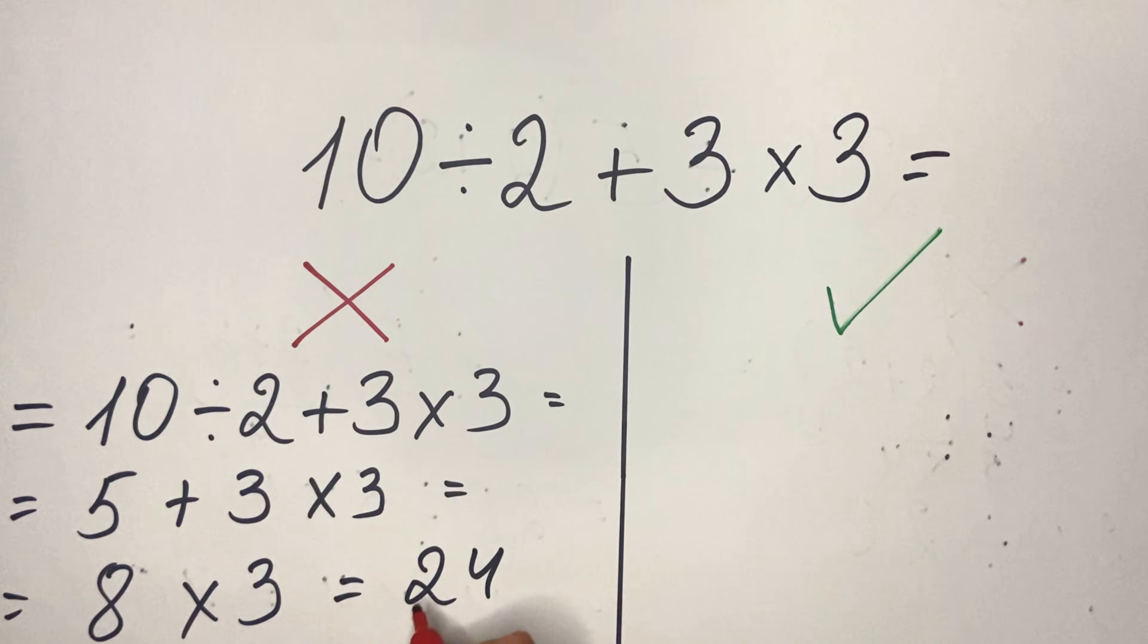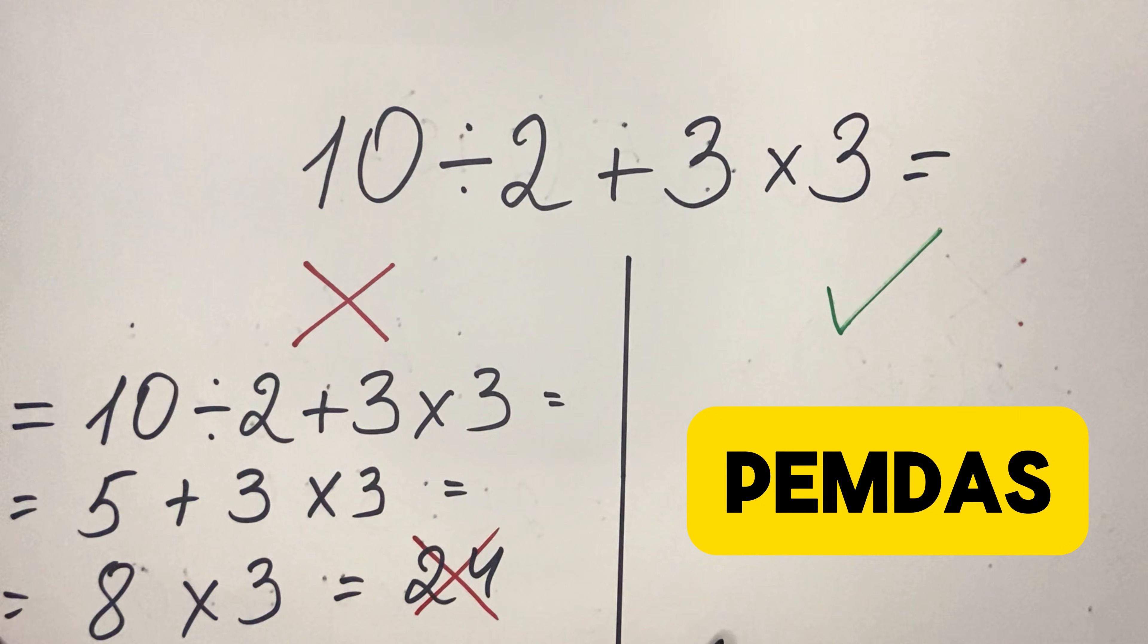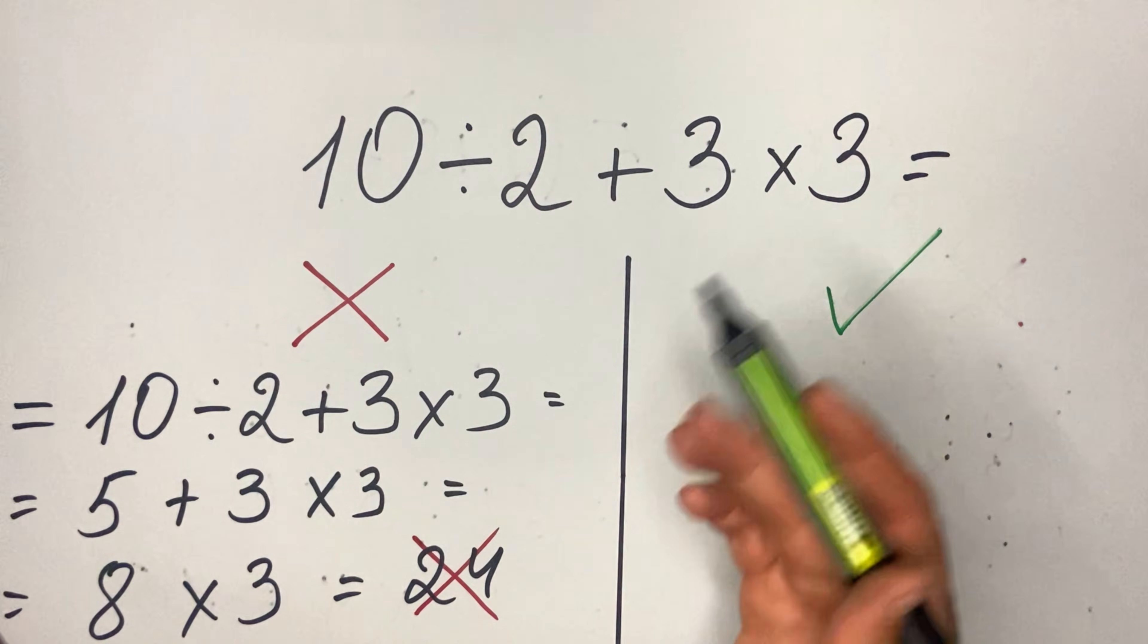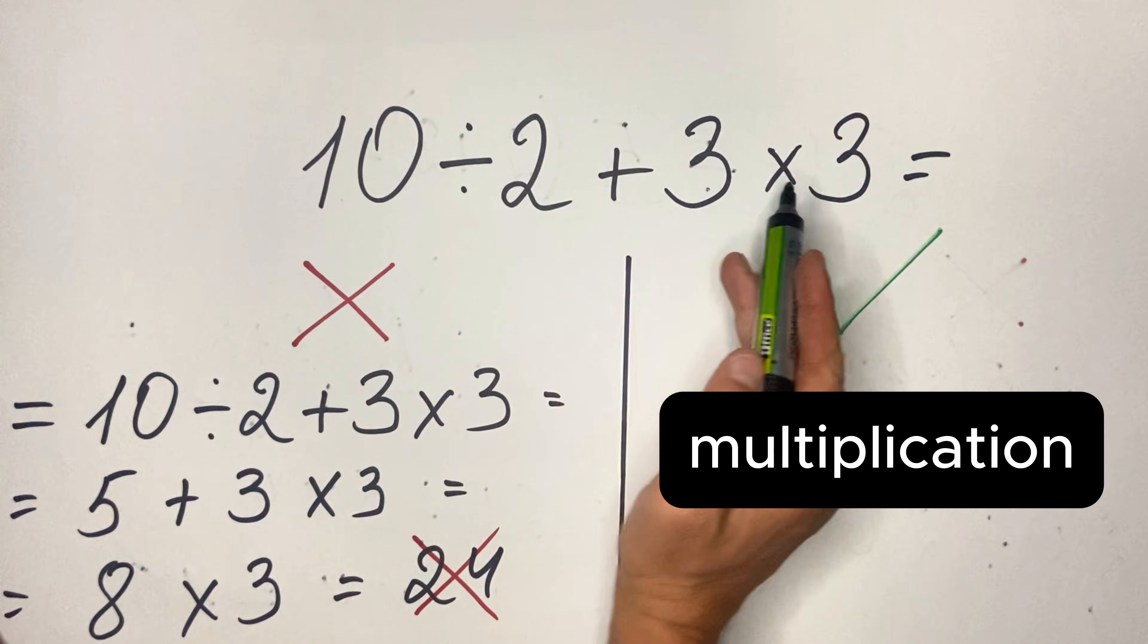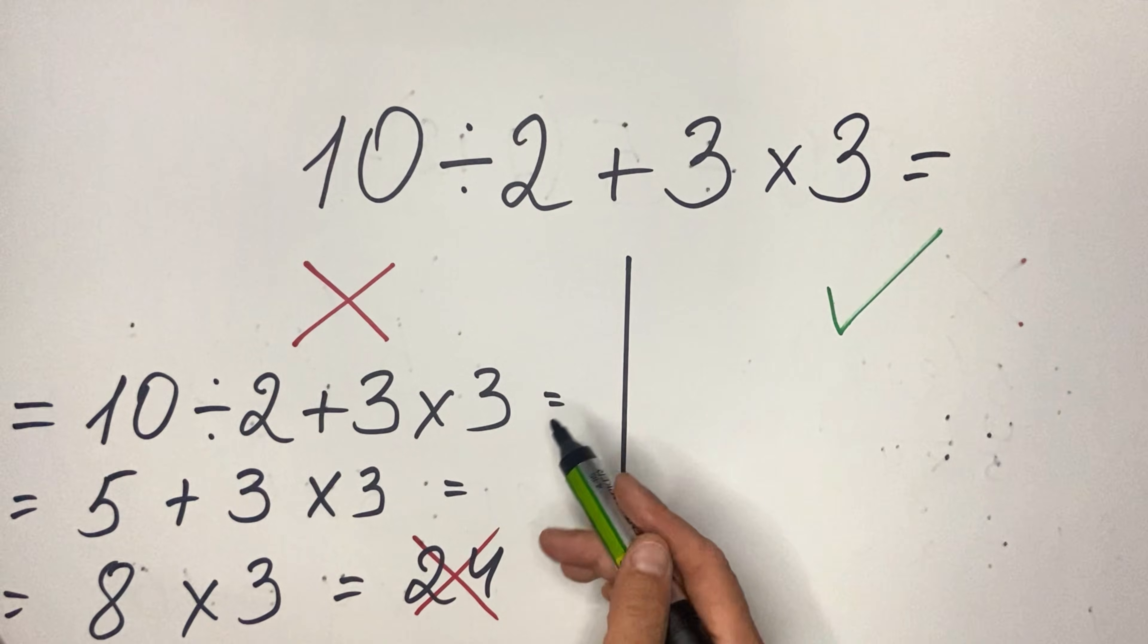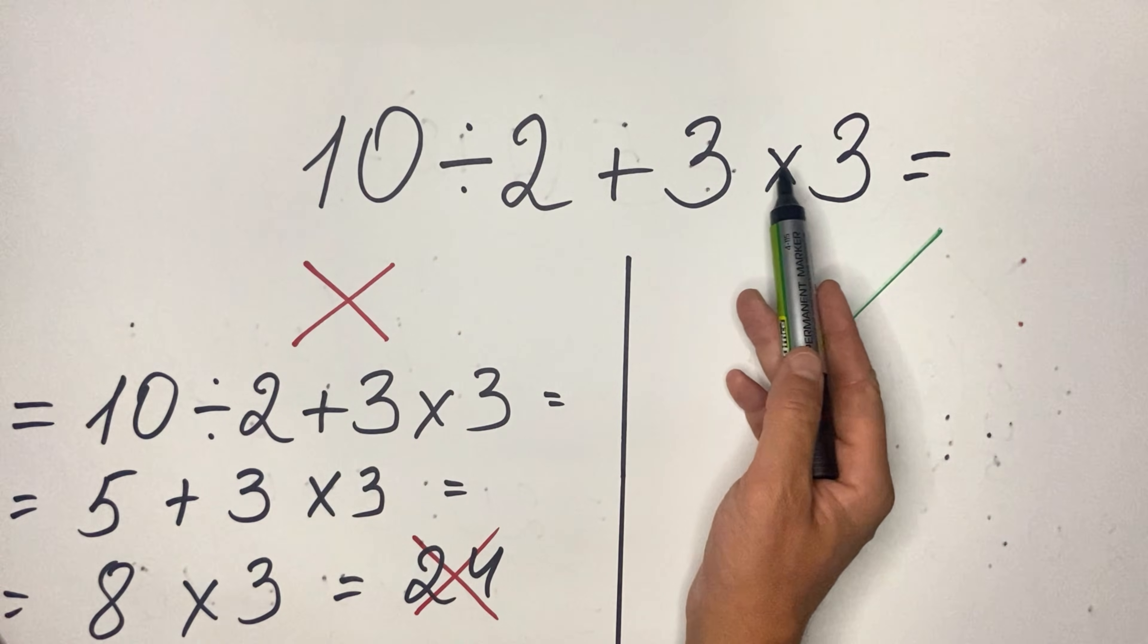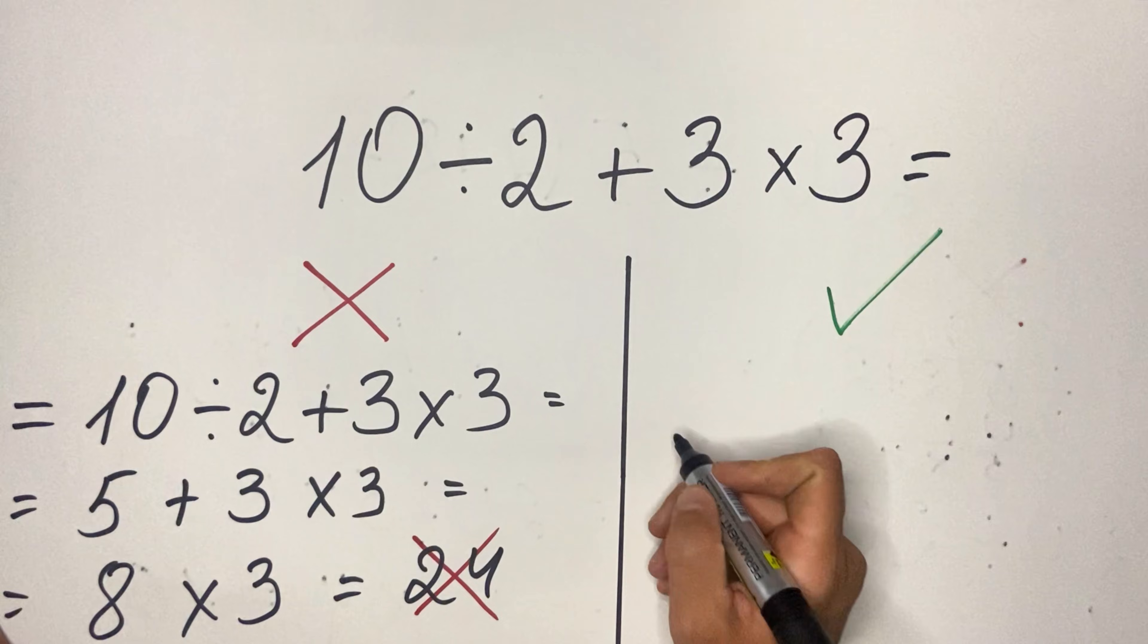We all know that of course this is wrong. Why? Because we have PEMDAS rules, which say that first is parenthesis (in this case we don't have any), then exponents (we don't have those either), then we have multiplication and division, and later we have addition and subtraction. So in our case, first we need to do 10 divided by 2, later 3 multiplied by 3, and then do the addition.